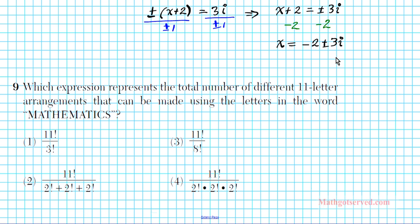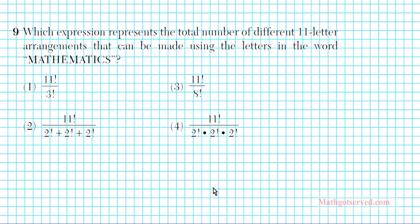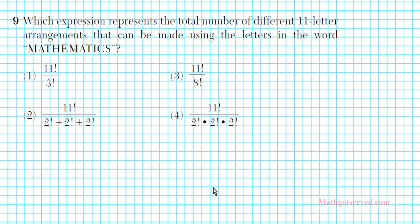Let's take a look at question number 9. It says: which expression represents the total number of different 11-letter arrangements that can be made using the letters in the word mathematics? I like to call these alpha perms or alphabetical permutations. When you think about arrangements, you're thinking about permutations — the different ways these letters can be arranged. Whenever you're dealing with the permutation of letters in a word, you want to think about the formula for alphabetical permutations.